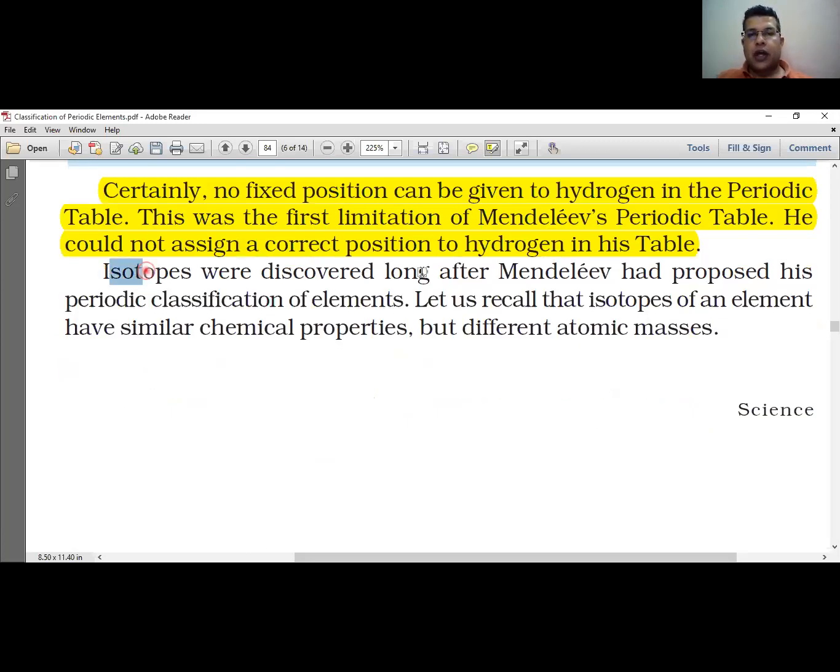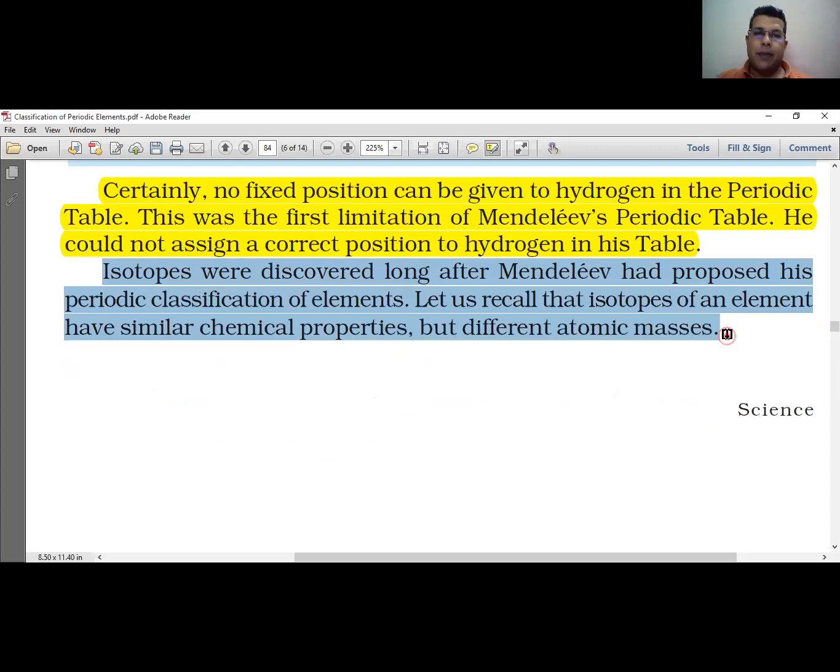Isotopes were discovered long after Mendeleev had proposed his periodic classification of elements. Let us recall that the isotopes of an element have similar chemical properties but different atomic masses.